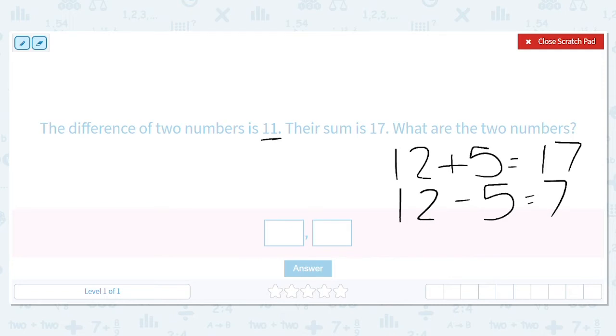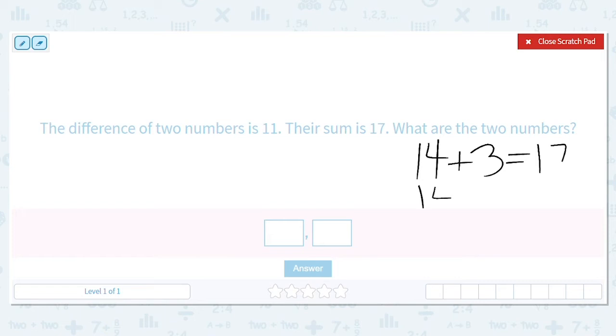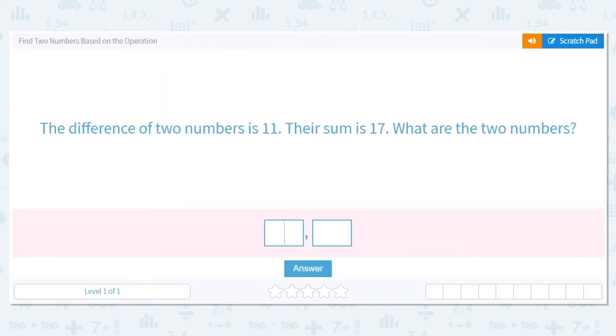Okay, so we have to go higher than 12. Let's try 14. 14 plus 3 equals 17. And 14 minus 3 equals 11. So there we have it. Our numbers are 14 and 3.